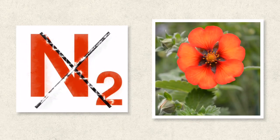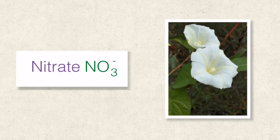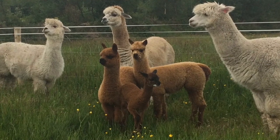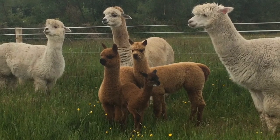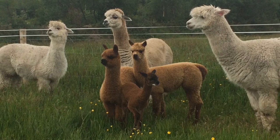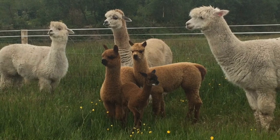Atmospheric nitrogen is not in a form usable by plants. Plants take in their nitrogen in the form of nitrate ions, and these nitrate ions enter the plant via the root hairs by means of active transport. Animals get their nitrogen either by eating plants or by eating other animals that have eaten the plants.